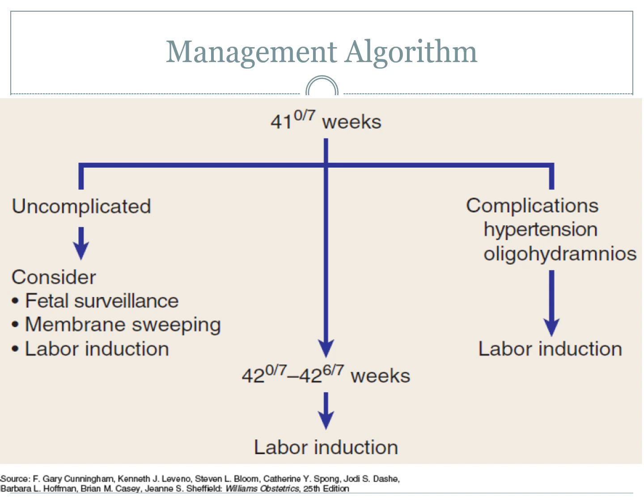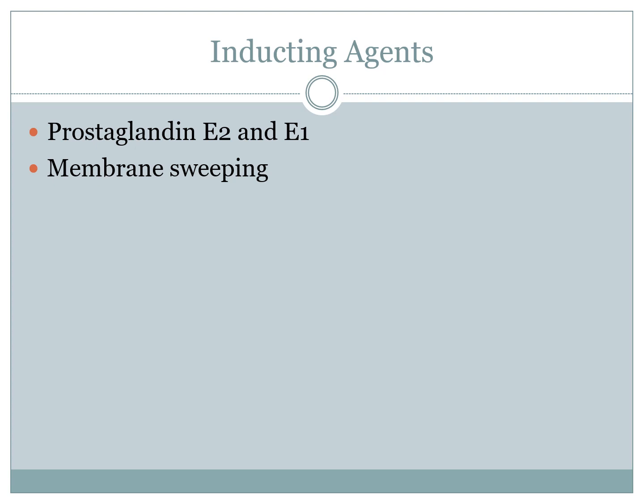The algorithm for patients at 41 weeks: if uncomplicated, we could continue with fetal surveillance, do membrane sweeping, or proceed with labor induction. If there are complications such as hypertension or oligohydramnios, we do labor induction. If we reach 42 weeks, we proceed with labor induction. A variety of inducing agents are used — prostaglandin E2 and E1; however, these are not available here. What we use for induction is dinoprostone, brand name Primigin or Cerviprime, and membrane sweeping to dilate and produce naturally synthetic prostaglandins.